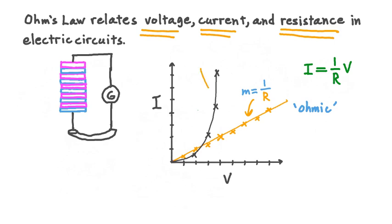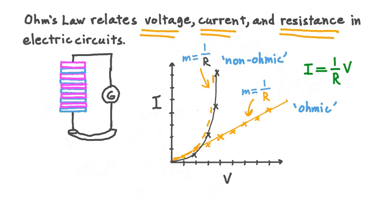In the curved case, the slope of the line is still equal to 1 over the resistance, but clearly the slope isn't constant throughout. It starts out fairly flat and then increases until it's almost a vertical line at the top. Since the slope changes, that means the resistance of this conductor changes as well, and that resistance depends on the current running through it. You might guess that the name of a material like this is non-ohmic — the resistance of the material is not a constant; it does depend on the current running through it. When it comes to ohmic and non-ohmic materials, unless we're told otherwise, it's often safe to assume that a material is ohmic.